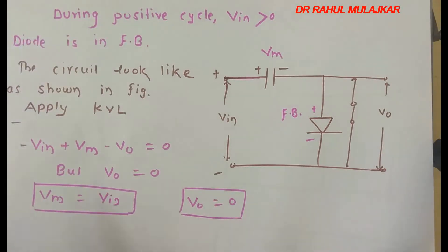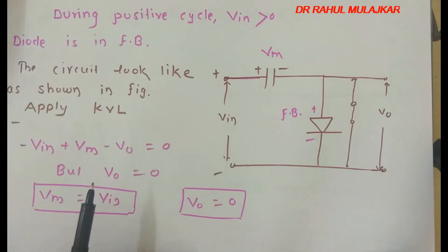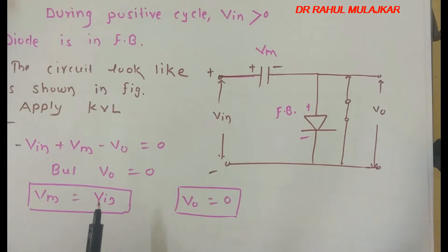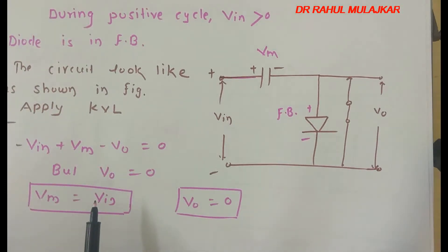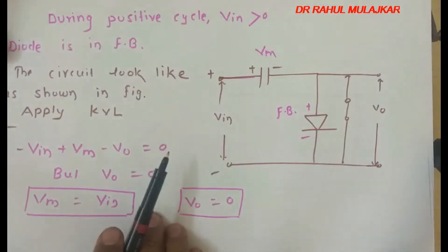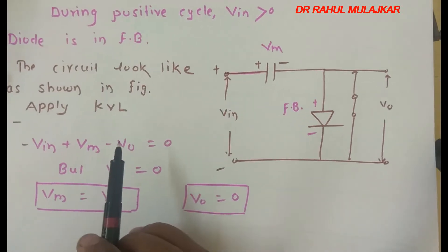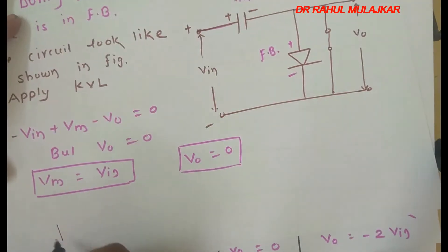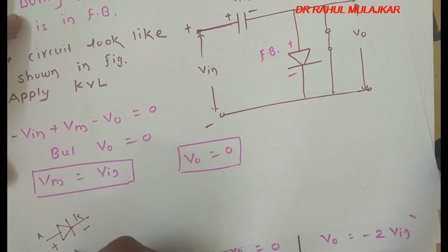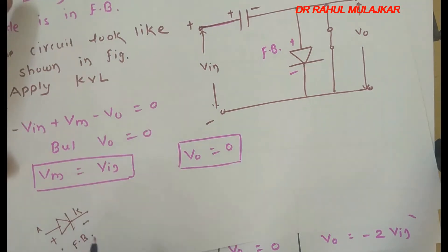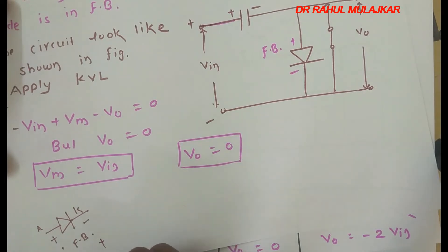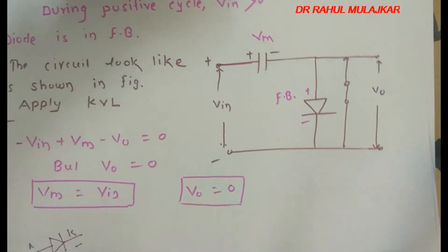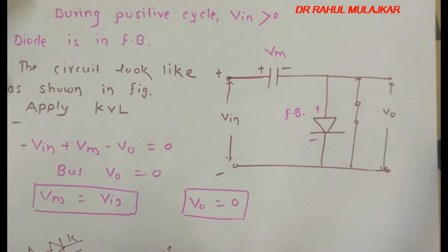When explaining the working of a clamper circuit, it is very important to note during which cycle the diode is in forward bias. First, you have to identify whether it is the positive or negative cycle during which the diode is in forward bias. For a diode to be forward biased, the anode must be positive with respect to cathode. If the anode is negative with respect to cathode, the diode is in reverse bias.